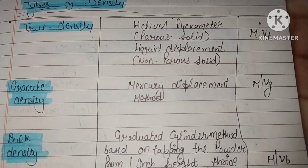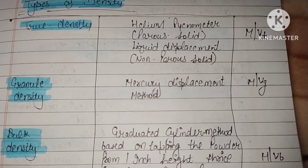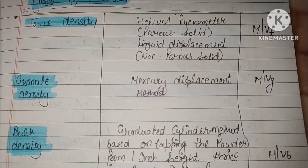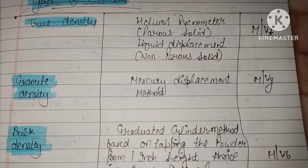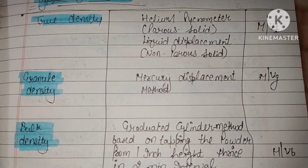Granule density is calculated as m/Vg, and it is measured using the mercury displacement method.